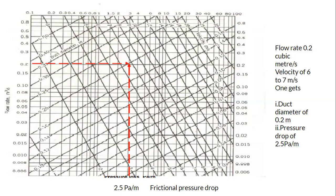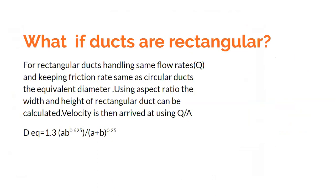Now, what if the duct is not circular? This friction chart is valid only for circular ducts. If it is a rectangular duct, we need to use the concept of equivalent diameter. Equivalent diameter means the diameter that would give you the same flow rate and same friction rate as the circular duct.